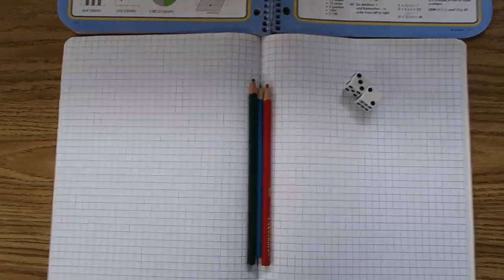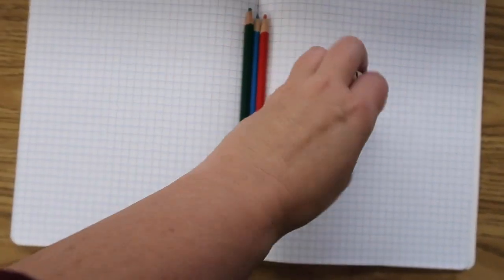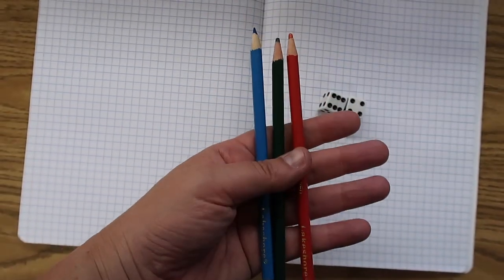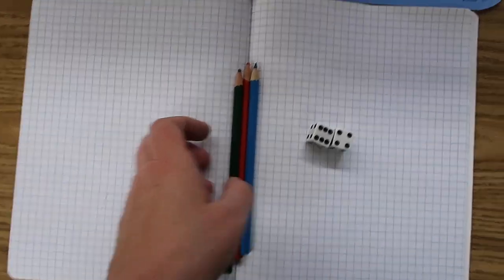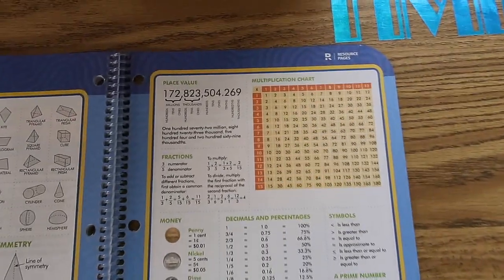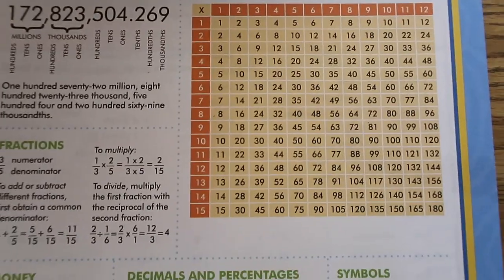So you will need graph paper, dice, and three different colored pencils, crayons, or markers. And the last thing you're going to need is a multiplication chart.